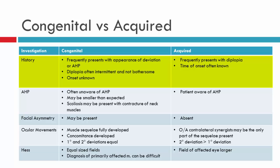With acquired palsies, on the other hand, the primary complaint is usually diplopia. They may also notice their eye is turning, but they will be very distinct in indicating they have double vision, compared to congenital or longstanding cases where it's not as bothersome. Usually with acquired neurogenic palsies, the timing or onset is quite well known. Because it's recently acquired, the history is quite exact as to when the patient first noted the double vision or the eye turn.